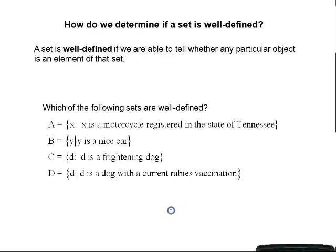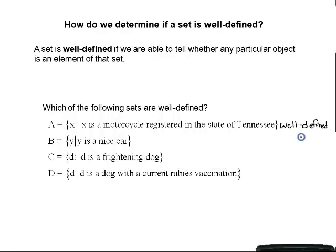How do we determine if a set is well defined? A set is well defined if we are able to tell whether any particular object is an element of that set. Let's look at some examples. Set A is the set of all X such that X is a motorcycle registered in the state of Tennessee — that is a well-defined set, because we can investigate and determine whether a particular motorcycle is registered in the state of Tennessee.